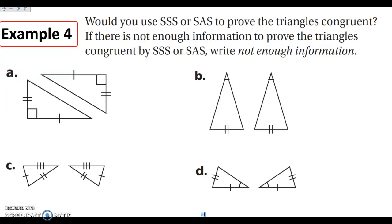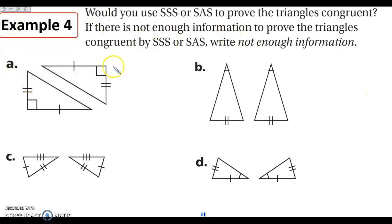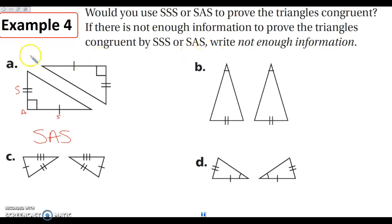Let's take a look at our last example. We want to know: can we use Side-Side-Side, Side-Angle-Side, or none of the above to show the given triangles are congruent? In the first pair, these two pairs of sides are congruent, these two pairs of angles are congruent, and these two pairs of sides — so I have a side, an angle, and a side. This is going to be Side-Angle-Side. I don't know this side congruent to that side, so I can't use Side-Side-Side.